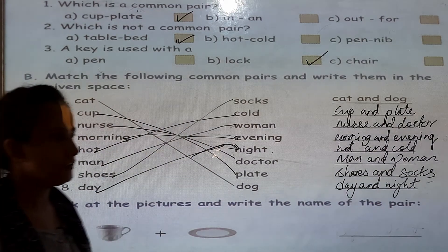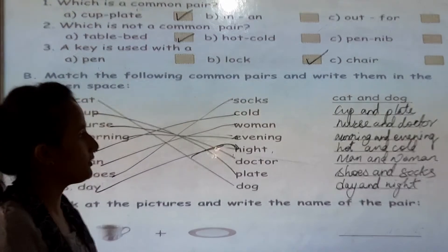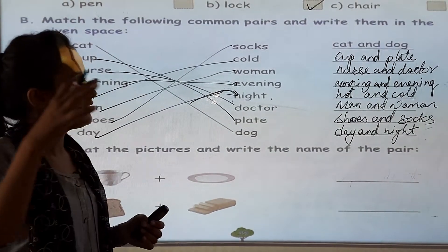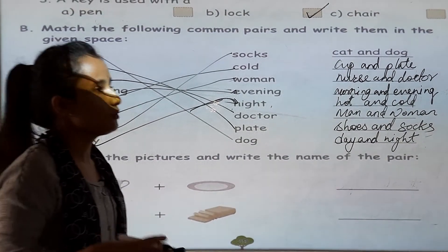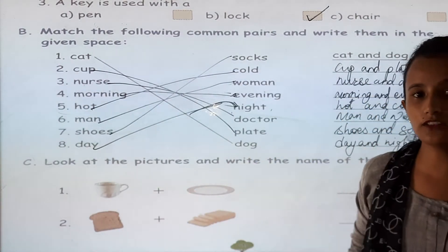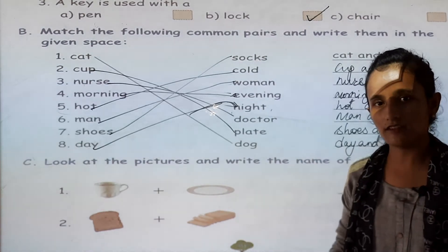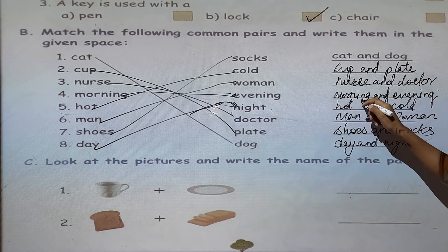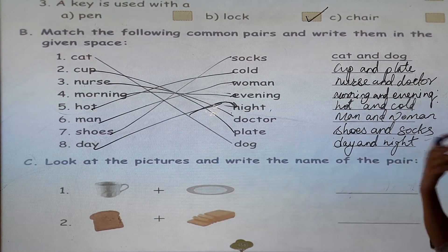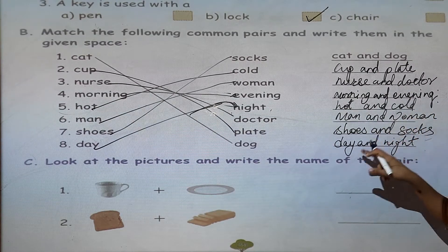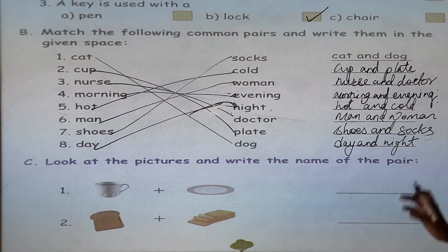Cup and plate, nurse and doctor — when you are going for a medical test, there is a doctor, but with the help of a nurse you are fed and cared for. Doctor checks up and gives medicine; nurse assists. Morning and evening are pairs. Men and women, shoes and socks, day and night — they are all pairs of words.